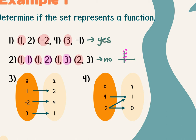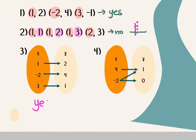For the mapping diagrams, the x values are on the left, the y values are on the right. For number 3, the x's don't repeat, so number 3 is a yes. For number 4, you have a negative 2 that goes with both a 1 and another negative 2 that goes with a 0. So that x repeats with a different y, which means this is a no.